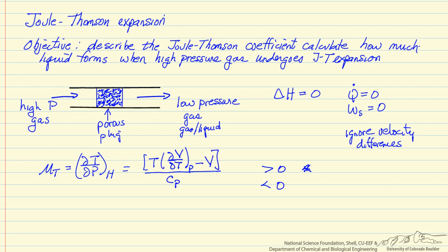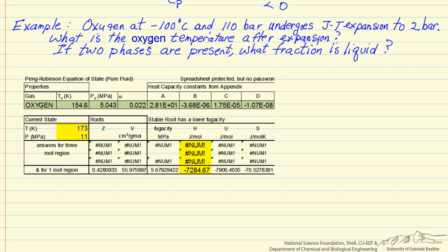Then we'll do an example here of using Joule-Thompson expansion to liquefy gas and get a mixture of liquid and vapor. We have oxygen at minus 100 degrees C and 110 bar. It's going to undergo Joule-Thompson expansion to a final pressure of 2 bar. The question is, what is the temperature of the oxygen after this expansion? And if two phases are present, what fraction of the total is in the liquid phase?